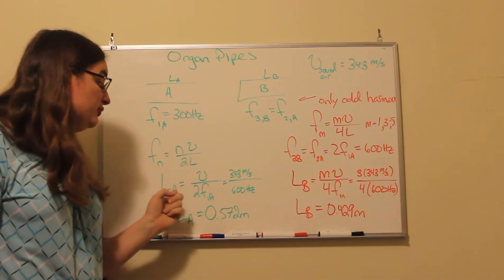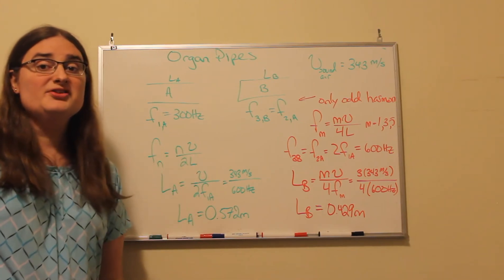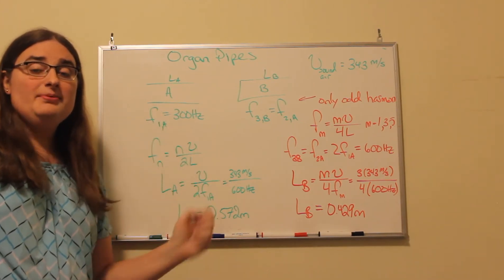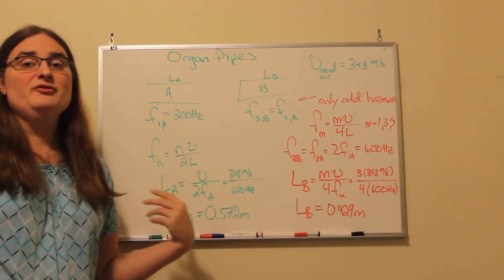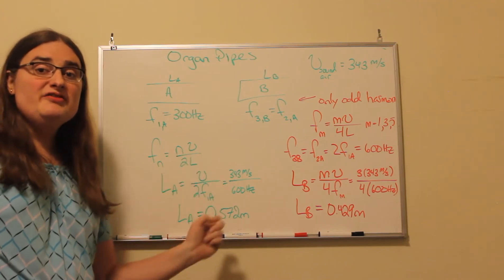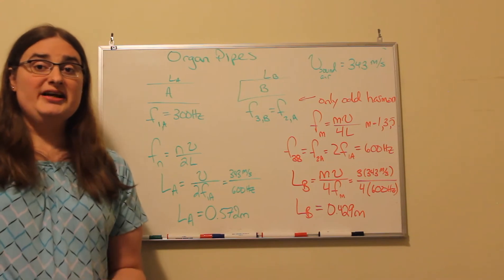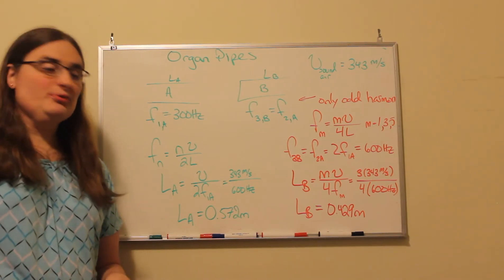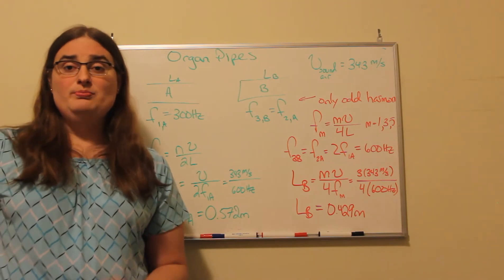And we would divide by two times the length of the pipe. So for my fundamental frequency, to solve for my length, I multiply both sides by L, I divide both sides by my frequency, and that tells me the length of my first pipe would be equal to the speed of sound divided by two times the fundamental frequency. So I have 343 meters per second divided by two times 300 Hertz, which gives me a length of 0.572 meters.